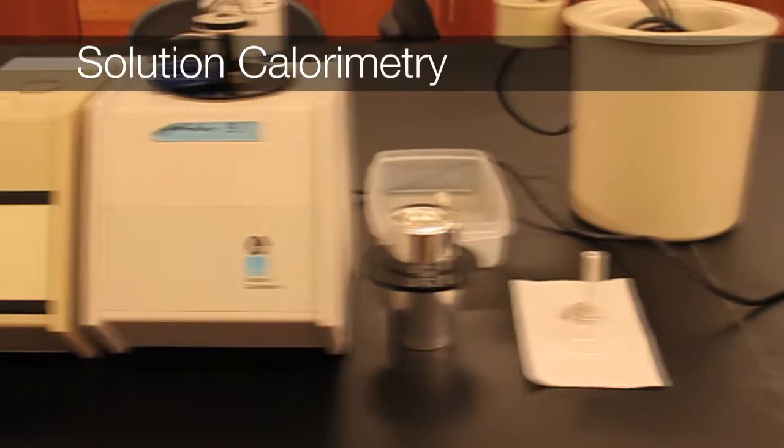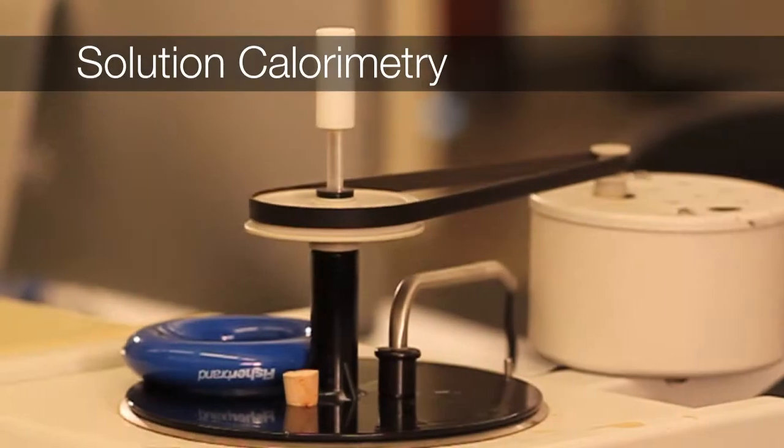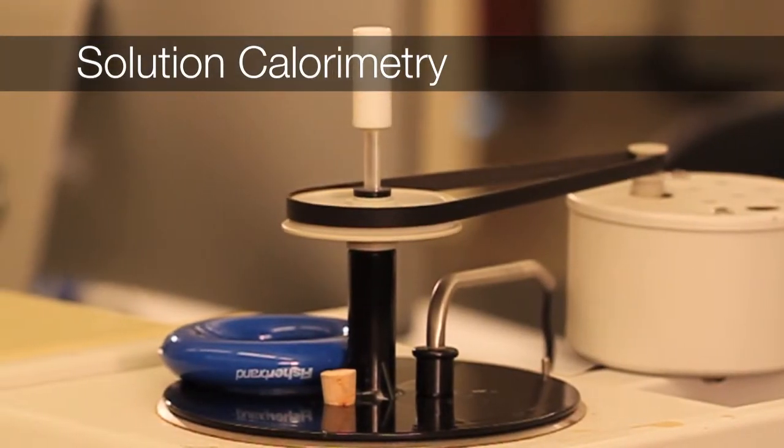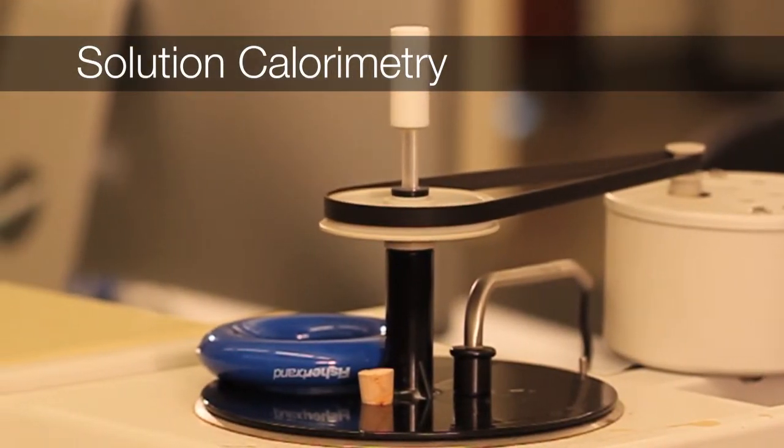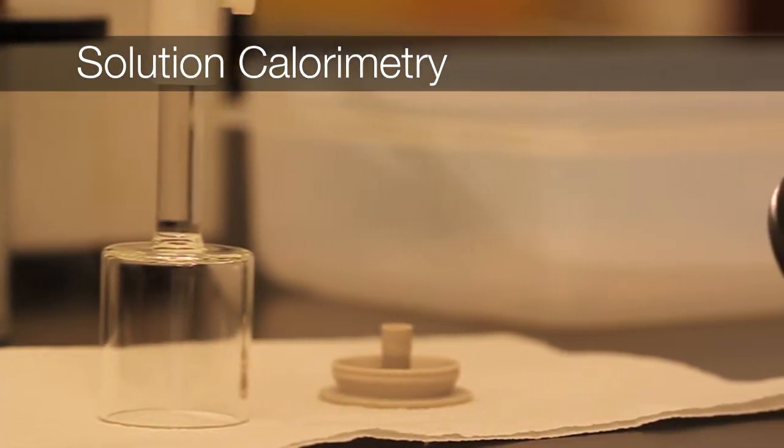You will measure the heat of ionization of glycine using solution calorimetry. Solution calorimetry is a type of constant pressure calorimetry. In solution calorimetry, a sample is released into a solution and the change in temperature is recorded.